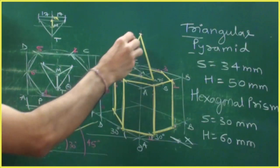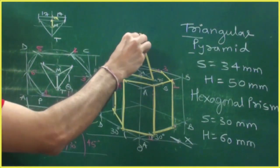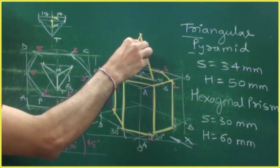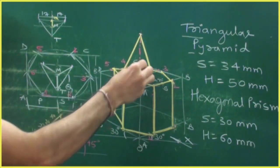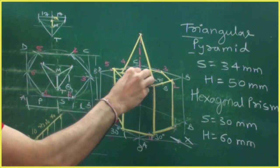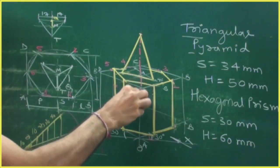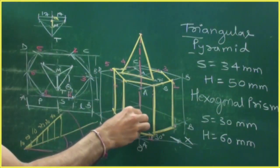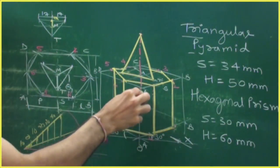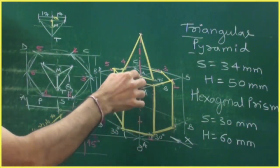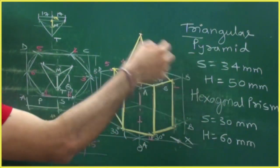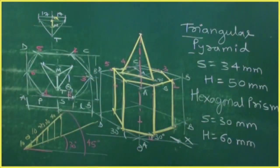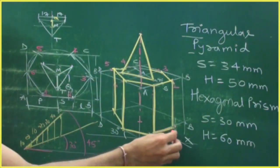All done — we can now draw the axis. Go down by the appropriate height for the axis lines, and then we can do dimensioning.